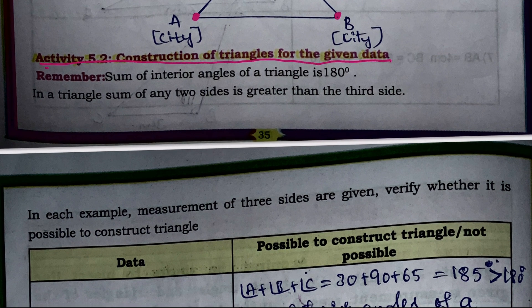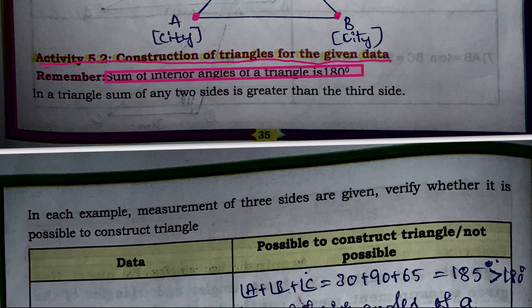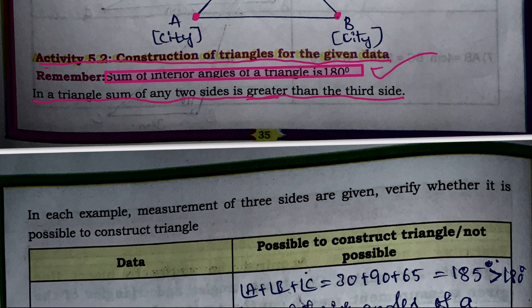For the construction of any triangle, we need to know two important points. First: the sum of the interior angles of a triangle is 180 degrees. Second: in a triangle, the sum of any two sides is greater than the third side. We must remember these two points while constructing any triangle.